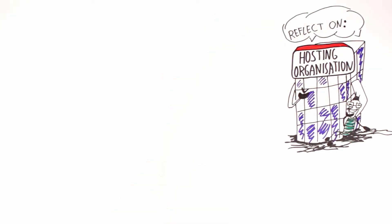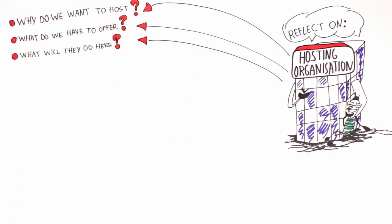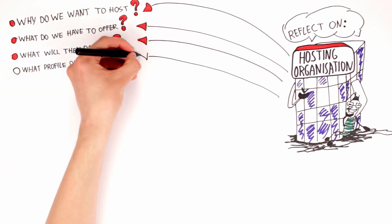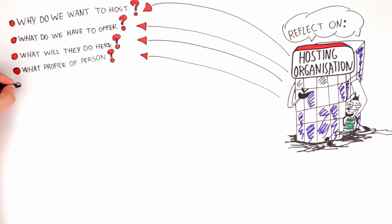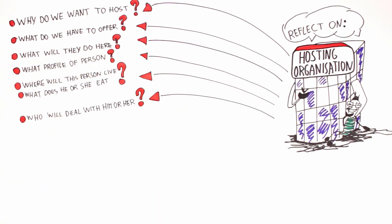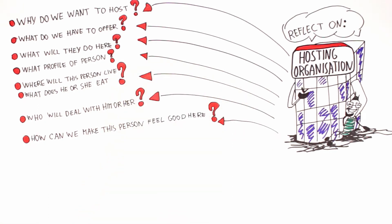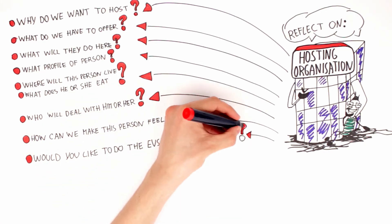For a hosting organization, you need to collectively reflect on why do we want to host European Voluntary Service, what do we have to offer the volunteers, what will a volunteer concretely do here, what profile of person do we want to host, any, experienced, set limits, where will this person live, what does he or she eat, who will deal with him or her, you need a job tutor and a mentor. How can we make this person feel good here? Is there something to do in their free time, are there other young people around? Can we give the volunteer room to use their initiative in the work he or she does? Would you like to do the EVS you are proposing?